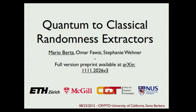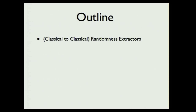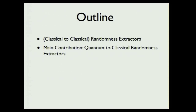The audience here is possibly quite mixed, so I'll start from some classical concepts — classical randomness extractors — and then motivate our quantum definitions. We start with classical-to-classical randomness extractors, giving a definition and explaining the parameters and constructions. Then I want to go to quantum-to-classical randomness extractors, give the definition, and show some explicit constructions.